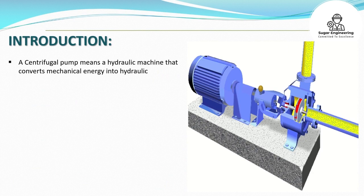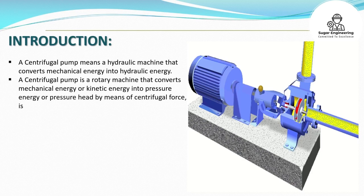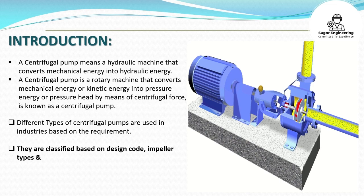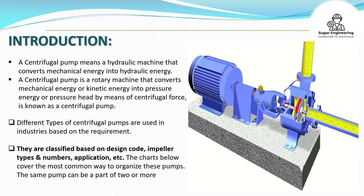A centrifugal pump is a hydraulic machine that converts mechanical energy into hydraulic energy. It is a rotary machine that converts mechanical energy or kinetic energy into pressure energy or pressure head by means of centrifugal force. Different types of centrifugal pumps are used in industries based on the requirement.